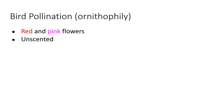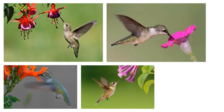So bird pollinated flowers — building our syndrome here — tend to be red and pink and unscented. Here we can see some examples of hummingbirds pollinating flowers. On the top left, that's a fuchsia — my favorite example of a bird pollinated flower because it is bright red with pinks and purples. It's pendant, so that dangling shape allows it to be more specialized for hummingbirds, which can hover. Other animals trying to get at the nectar might not be able to get into that pendant flower. So it's pendant, red and pink, has some purples, and it doesn't smell like anything.